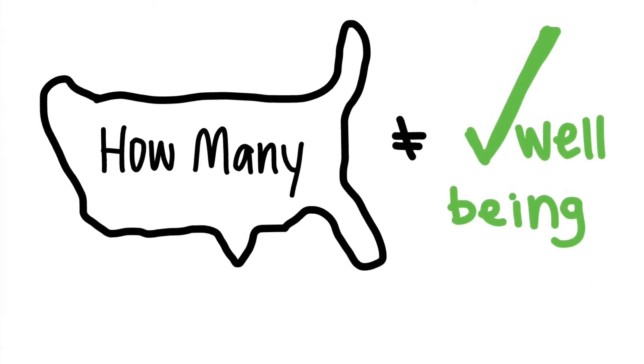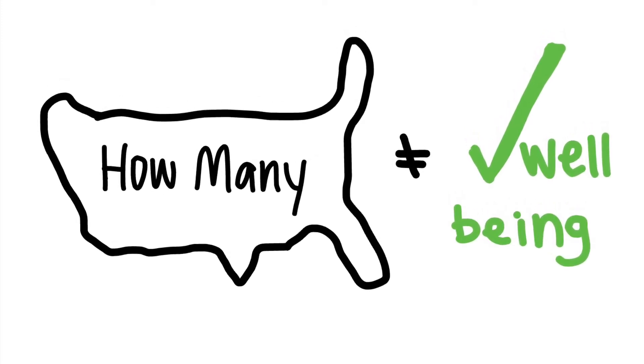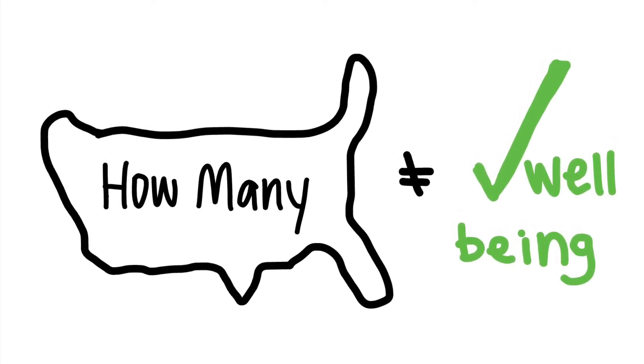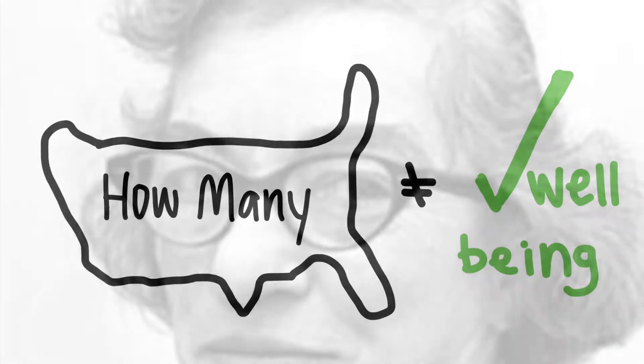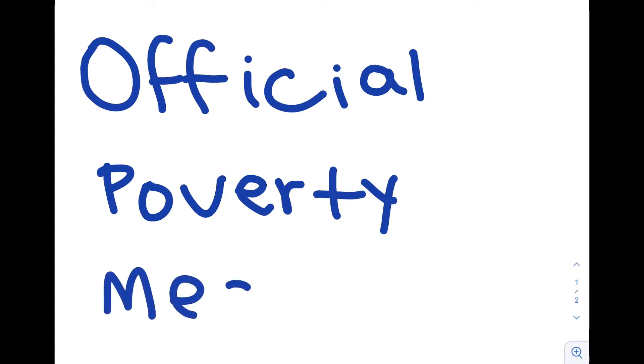For many decades, economists, statisticians, and officials in the United States have been creating certain measurement methods to gauge how many Americans are in poverty. In the 1960s, an American economist named Molly Orshansky discovered in her research that the typical American household spent a third of their income on food. From this, she found that by multiplying a household's grocery bill by three, she was able to develop income thresholds better known as the poverty line.